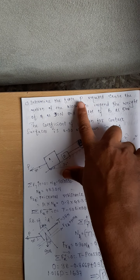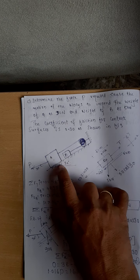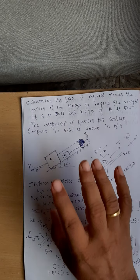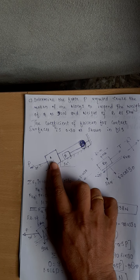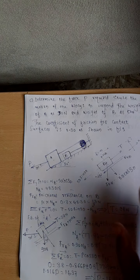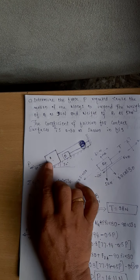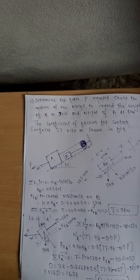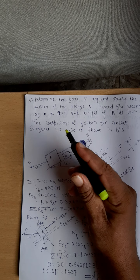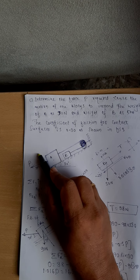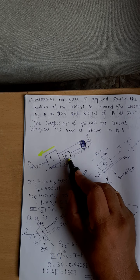The coefficient of friction at the contact surface is 0.3. He is asking what value of force P is required to set the system in motion. Visualize the problem: mass B is 50 N, mass A is 90 N. As the applied force increases, this whole system will start to move. Therefore, if the body moves, block A moves in this direction and block B moves in this direction because of the applied force.